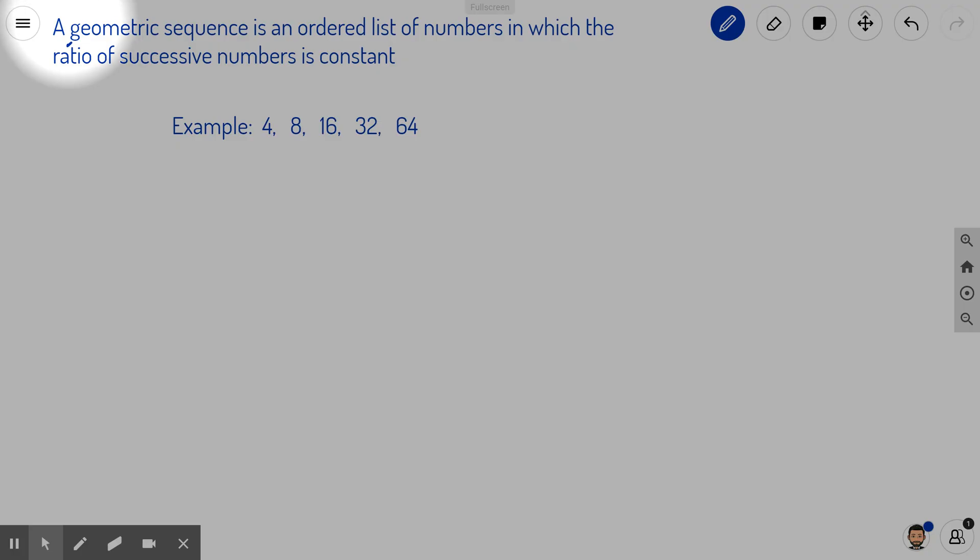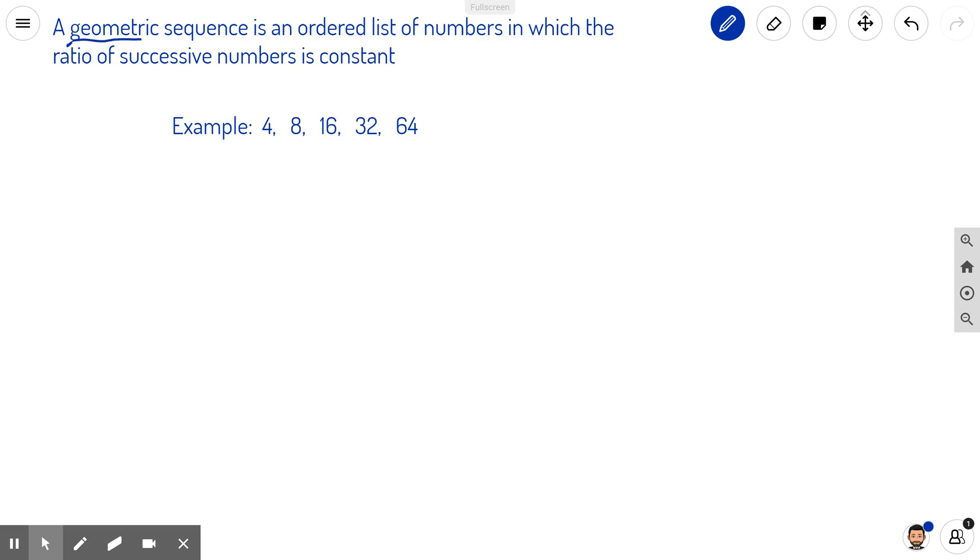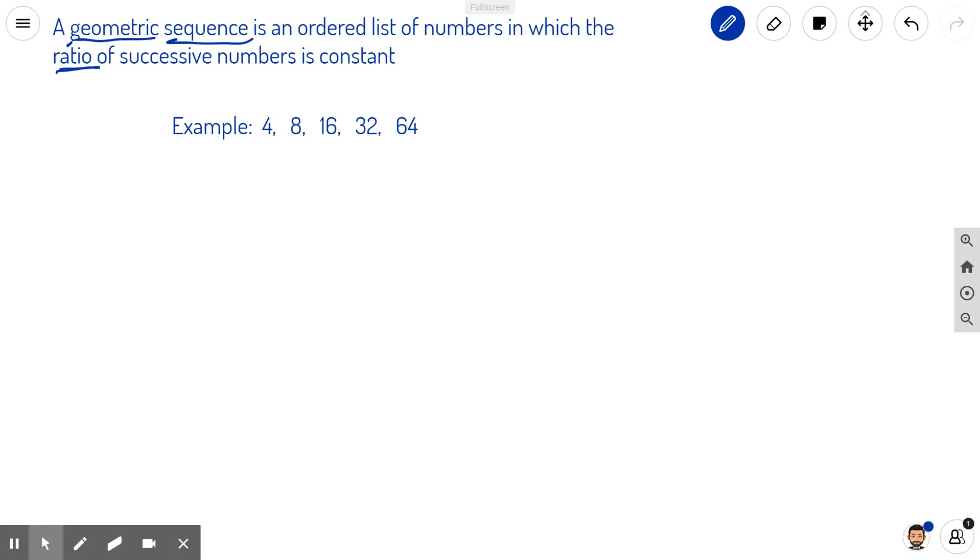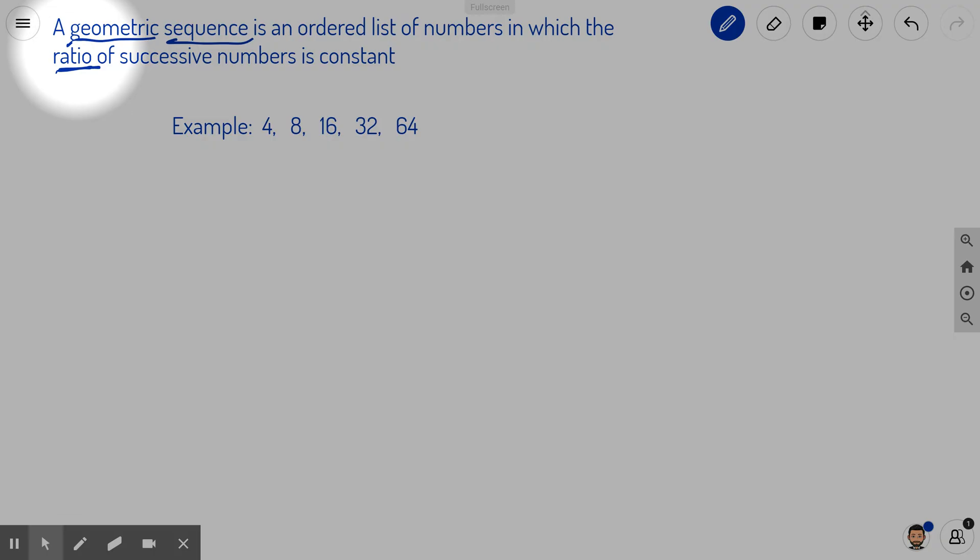A geometric sequence is an ordered list of numbers in which the ratio of successive numbers is constant. Now that might sound complicated, but it's really quite simple.